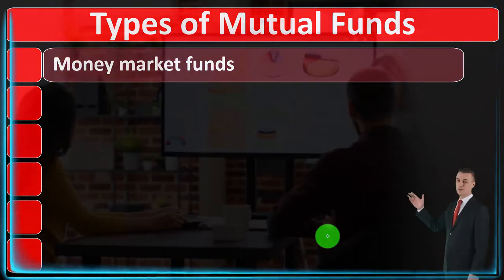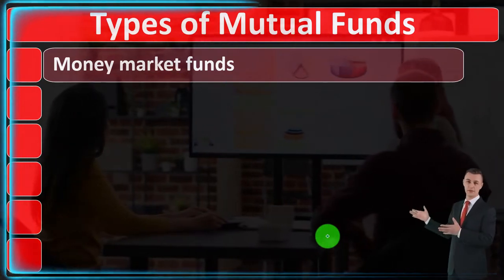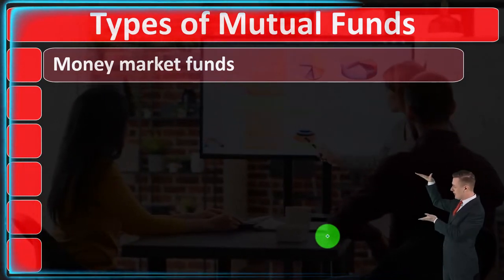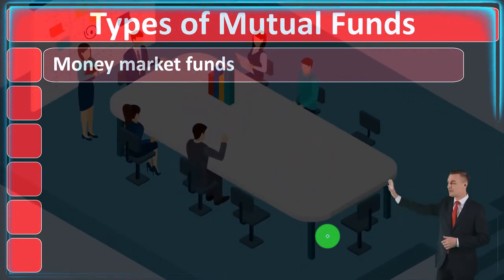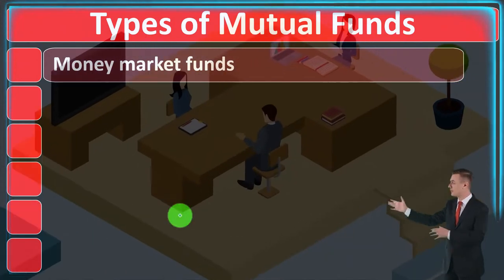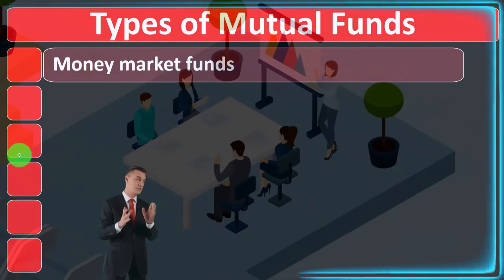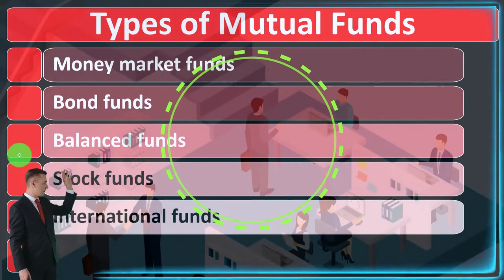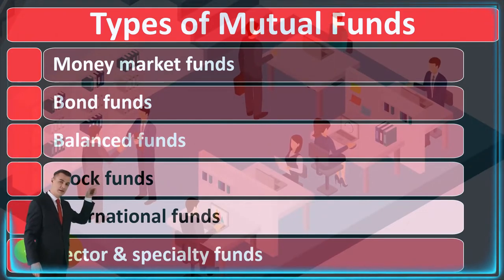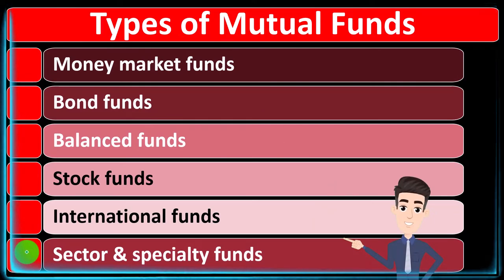We've recently been looking at different types and categories of mutual funds, because once we think about investing in funds like mutual funds and ETFs, we want to think about what kinds are available to us and what investment strategy we should put together. Here's a quick recap: money market funds, bond funds, balanced funds, stock funds, international funds — and now we're going to look at sector and specialty funds.